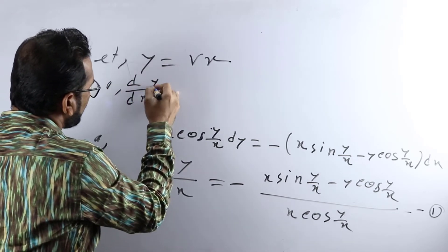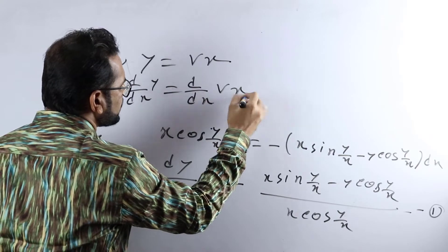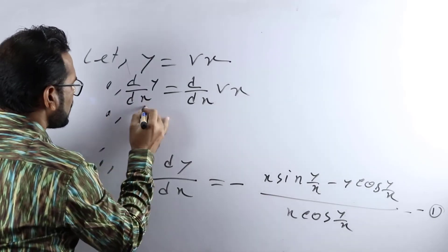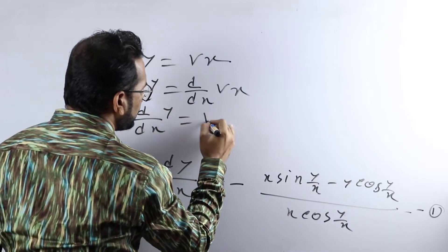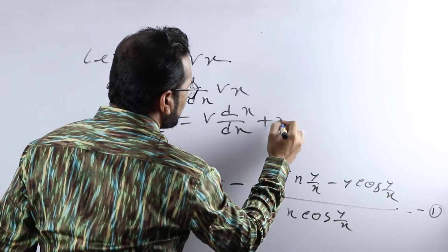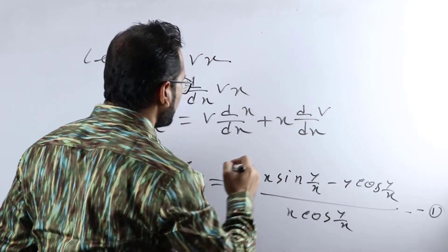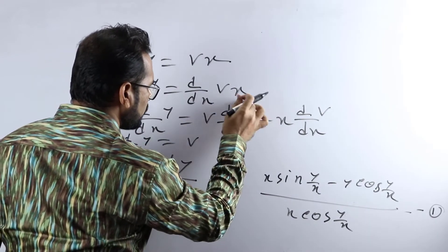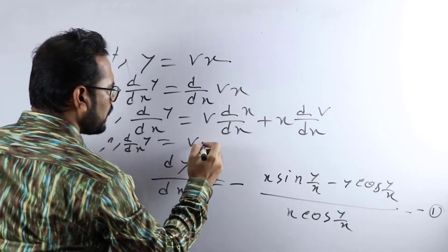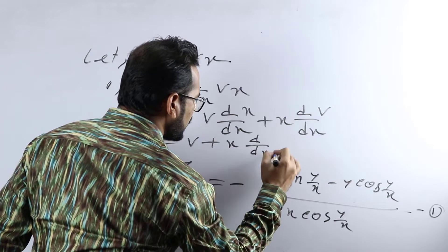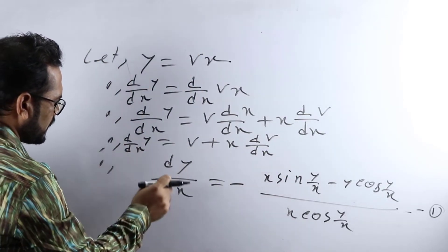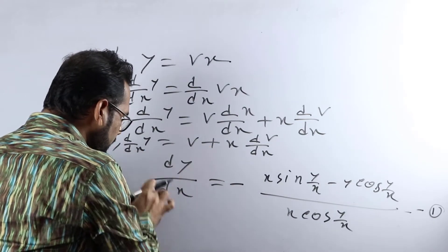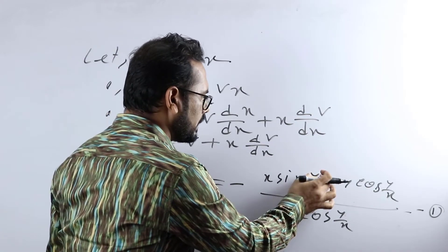From y equals vx, we need to find d/dx of y. We differentiate: d/dx of y equals d/dx of vx. Since there are two terms, we use the UV (product rule) formula: d/dx of y equals v times d/dx of x plus x times d/dx of v. This gives d/dx of y equals v times 1 plus x dv/dx, so dy/dx equals v plus x dv/dx.